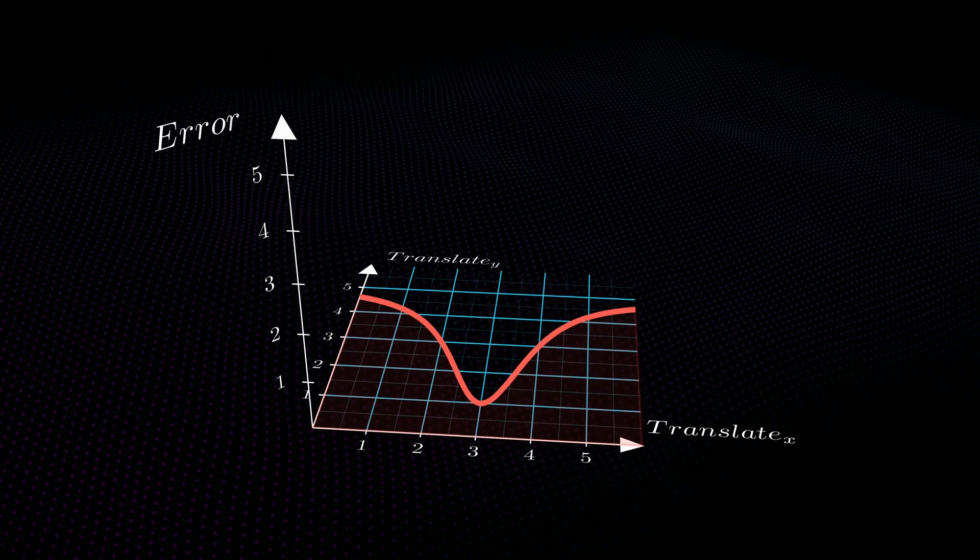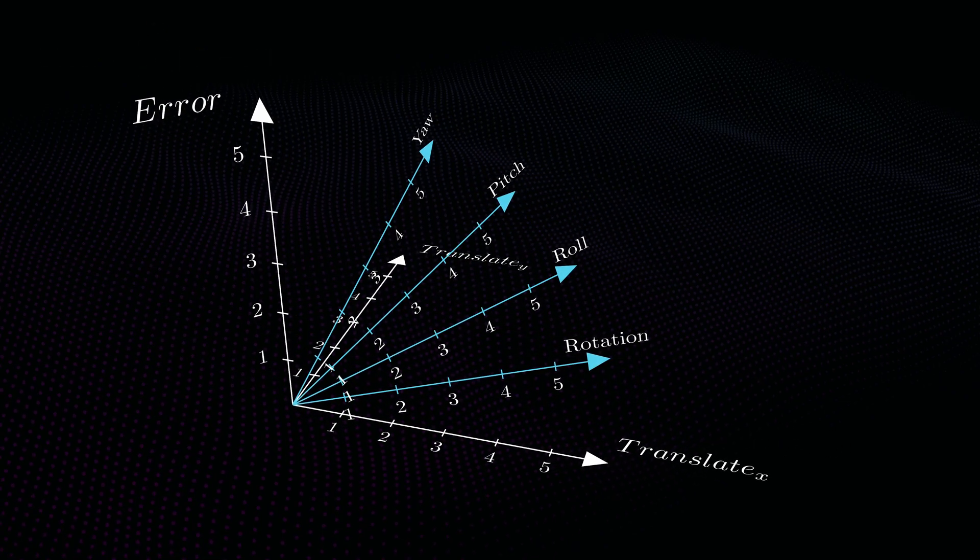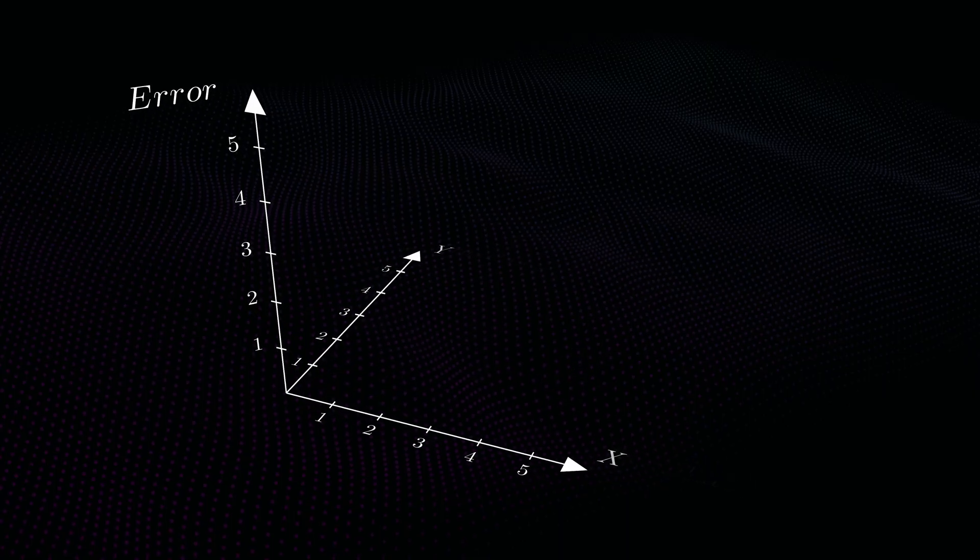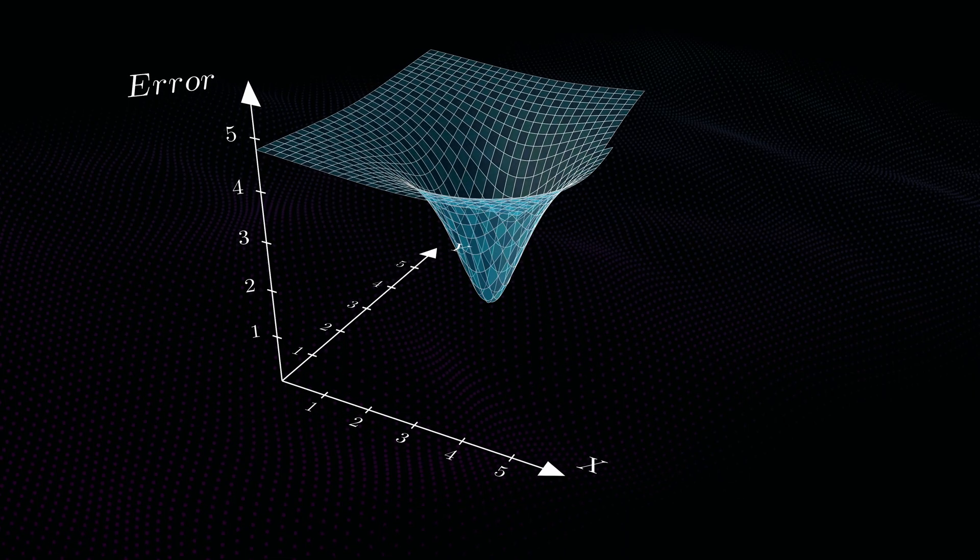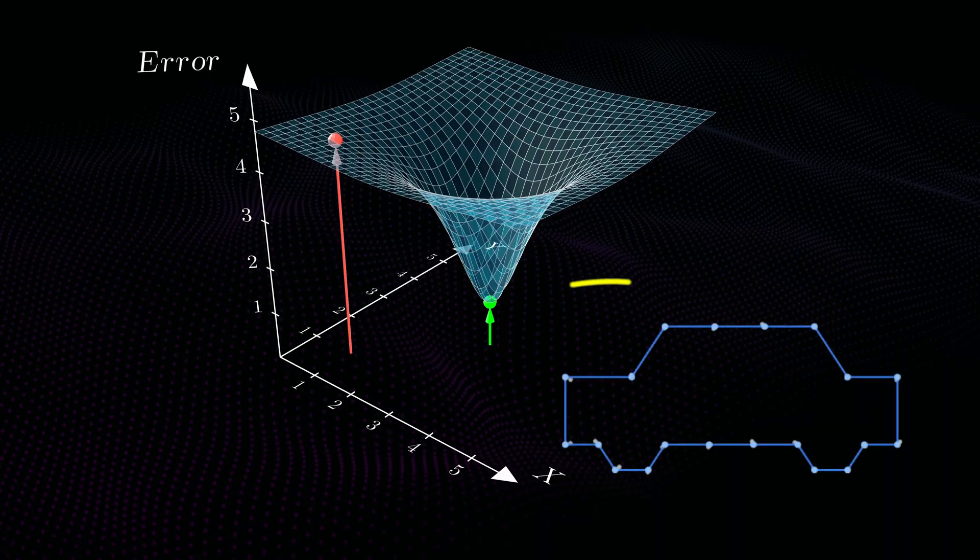But the real surface has as many dimensions as we have variables. That's hard to understand intuitively. So we'll project down to a 2D surface instead. The XY positions on the surface are different transforms, and the height is the error score. Here, the right answer should have the lowest error.